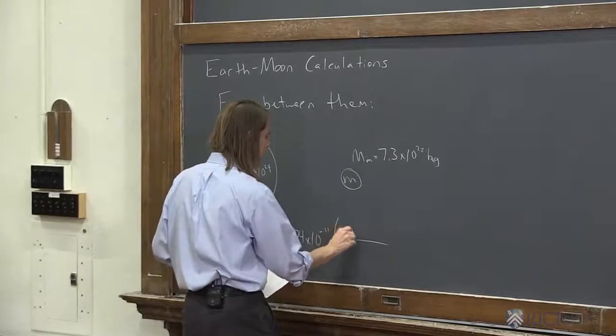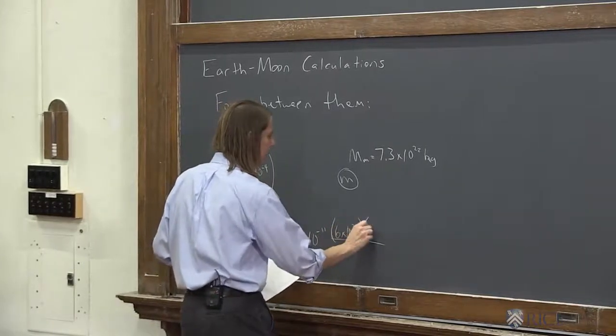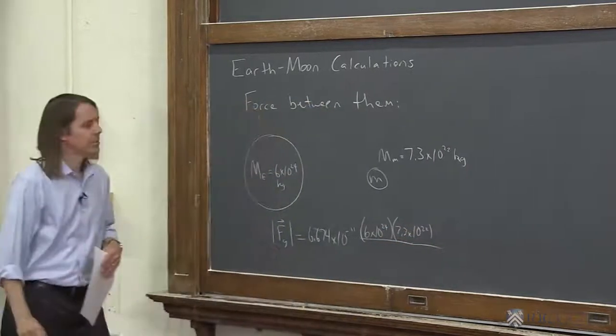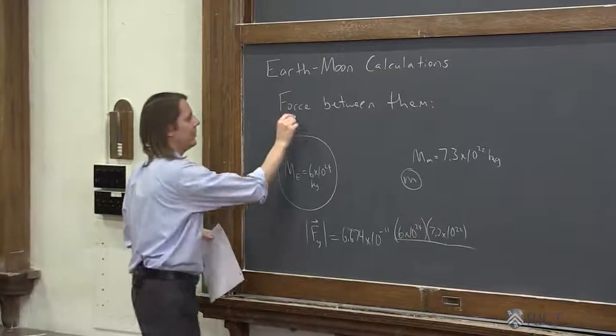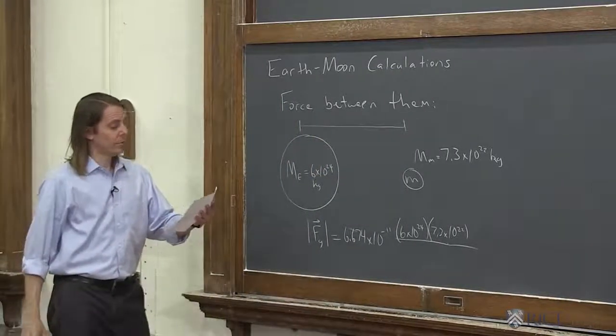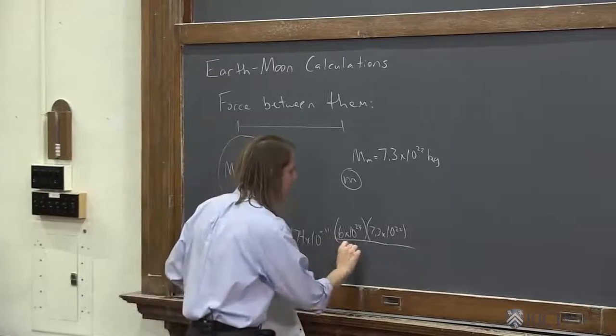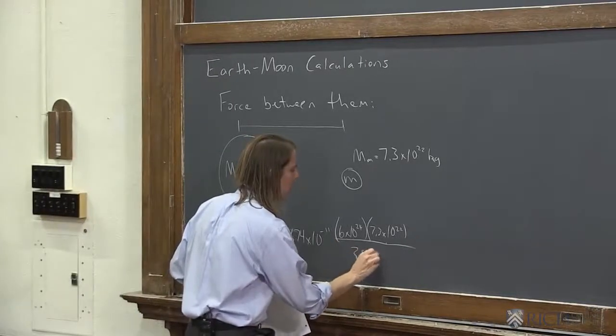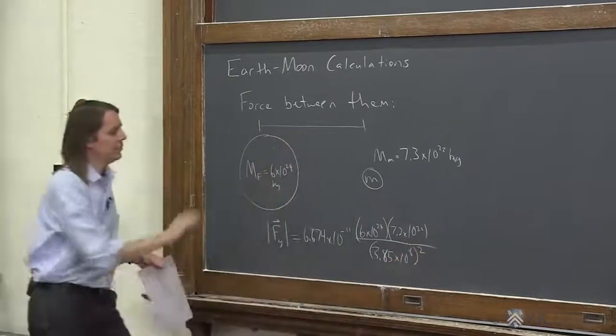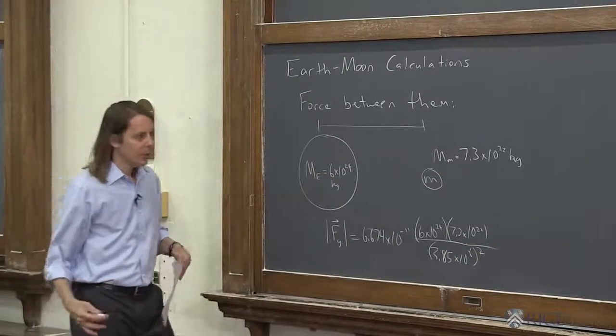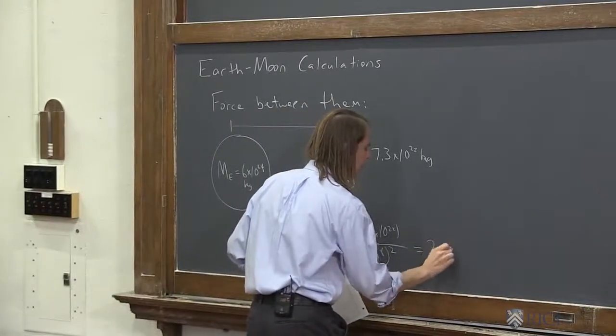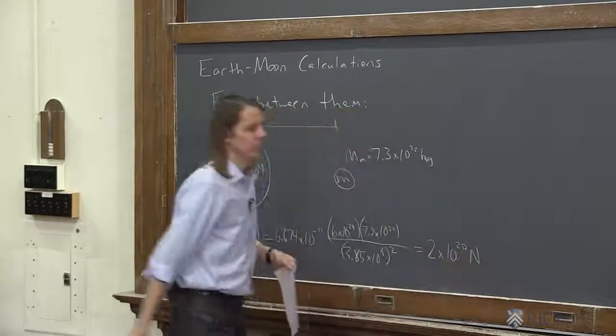6 times 10 to the 24, 7.3 times 10 to the 22, over the separation squared. How far is it from the Earth to the Moon? It's a long way, 3.85 times 10 to the 8 meters squared, all in MKS units. You do all that and you get an easy number to remember, 2 times 10 to the 20 Newtons.